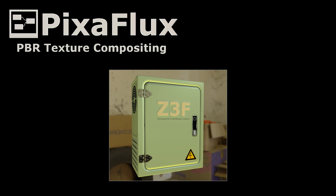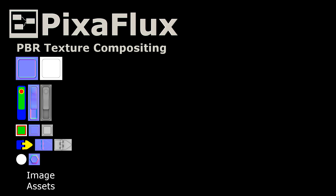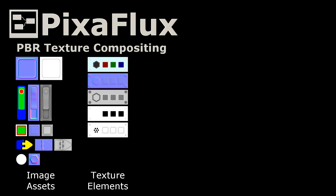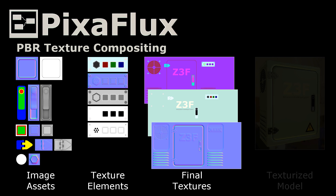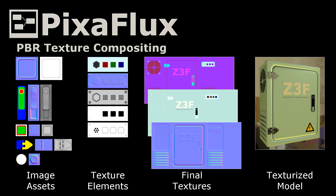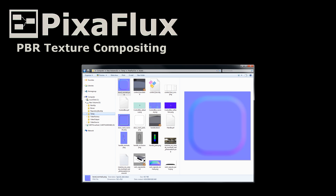Hello, in this Pixaflux video tutorial, you will learn how to create the textures for this 3D asset, an industrial control box. For this project, you will use image assets that have been baked in Blender. These image assets will be composed into PBR texture elements, and then into the final PBR textures for the control box. We recommend watching the 'Create and Manipulate Nodes in Pixaflux' video before watching this tutorial. In the description of this video, you will find a link to the assets used in this project. Download the zip file and expand it in a directory on your computer.